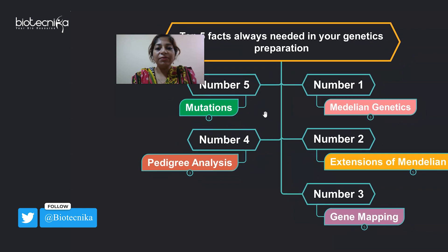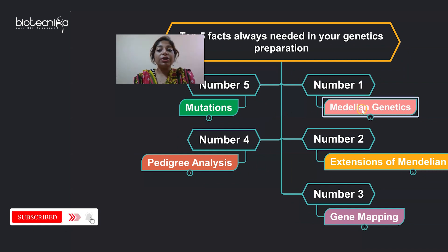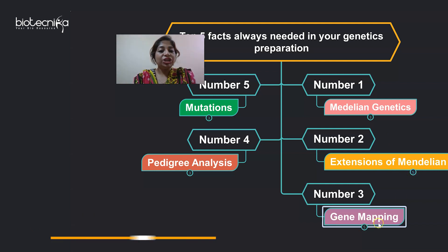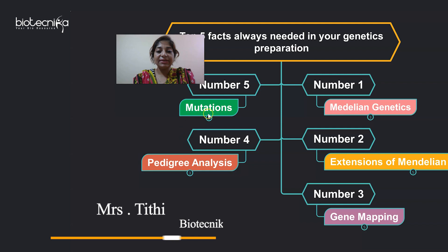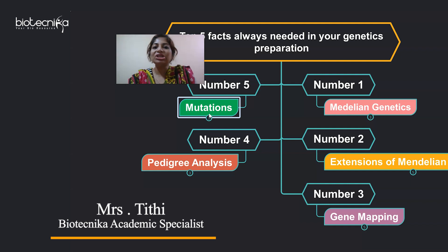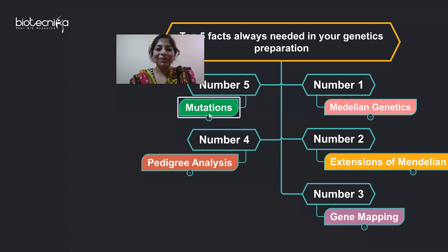These are the top five facts you will always need in your genetics preparation: Mendelian genetics, the deviations from Mendelian principles, gene mapping, pedigree analysis, and mutations. Thank you everyone for watching. I'm sure this will help you in your genetics preparation. Have a great day.